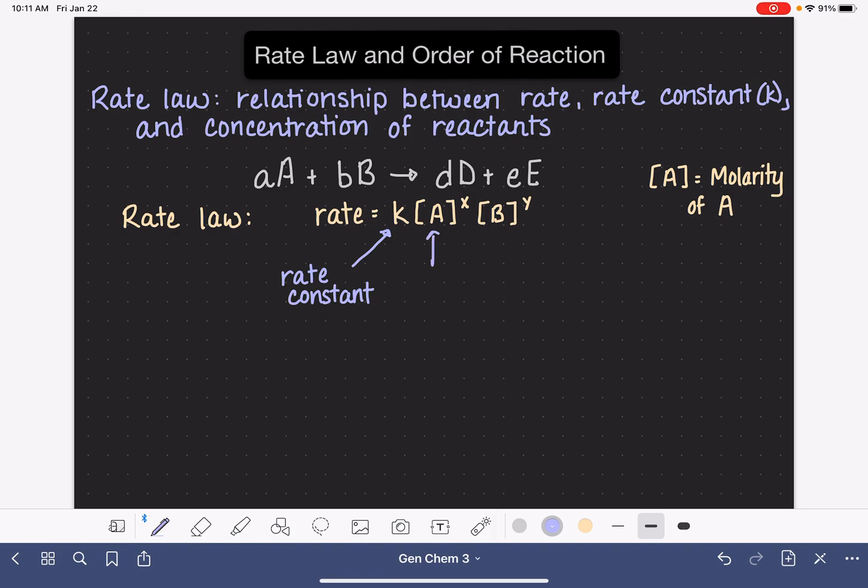A and B are the molarities, the concentrations, and then x and y, these are numbers that are experimentally determined, and they have nothing to do with stoichiometry. So they are not the coefficients.